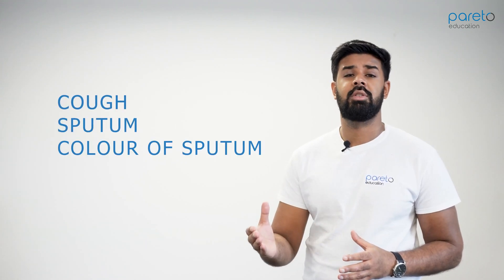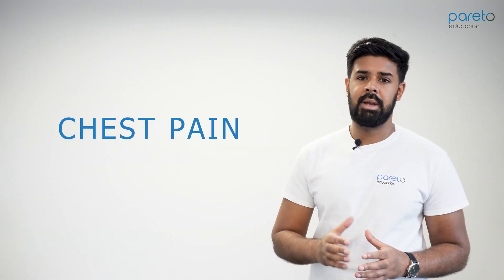When taking a shortness of breath history, it's very important to consider the associated symptoms. When patients present with shortness of breath, ask about a cough, whether they have sputum with their cough, and what colour the sputum is — this will give you a lot of information. It's also very important to ask about chest pain, as it's often associated with shortness of breath and can allude to certain diagnoses.